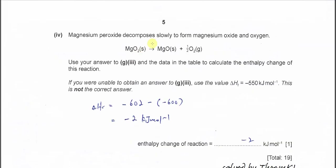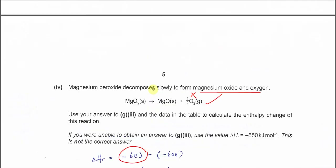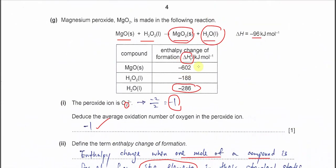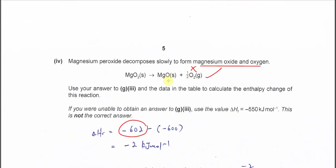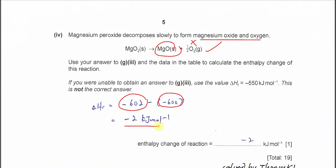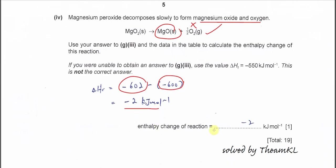Part 4: magnesium peroxide decomposes slowly to form magnesium oxide and oxygen. Using your answer from Part 3 and the data in the table, calculate the enthalpy change of this reaction. Again use ΔH = ΔHf(products) − ΔHf(reactants). Elements are not included. ΔHf of MgO from the table is −602 kJ/mol (product); ΔHf of MgO₂ is −600 kJ/mol (reactant). So ΔH = −602 − (−600) = −2 kJ/mol.